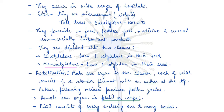Angiosperms are divided into two classes: dicotyledons and monocotyledons. When they germinate, they either form two cotyledons in their seed or one cotyledon in their seed.